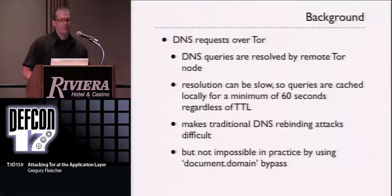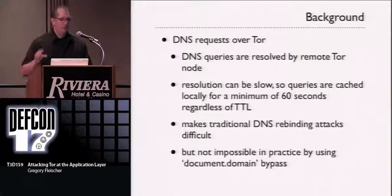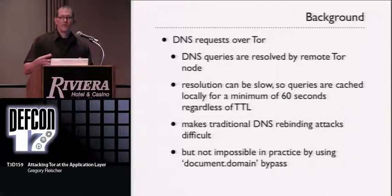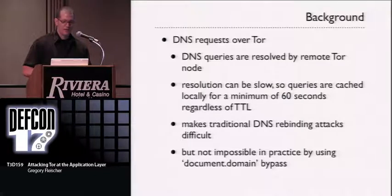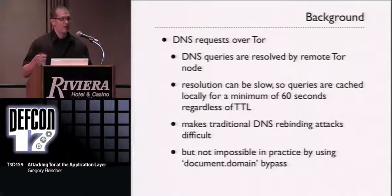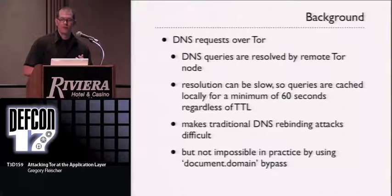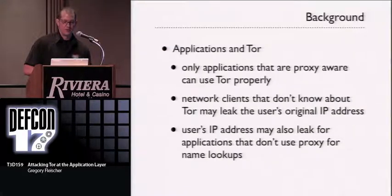DNS queries are resolved by your remote Tor node, not locally. If somebody can cause you to make a DNS request, you will be leaking information about where you're located — perhaps your local ISP or your own local network. Traditional DNS rebinding attacks are difficult because Tor caches DNS results for a minimum of 60 seconds regardless of the remote server's TTL. But it's not impossible using techniques such as the document.domain bypass.